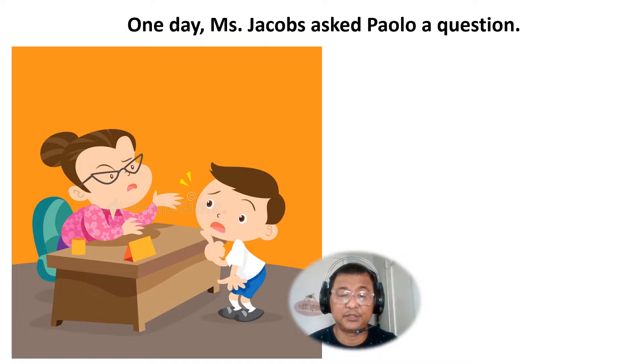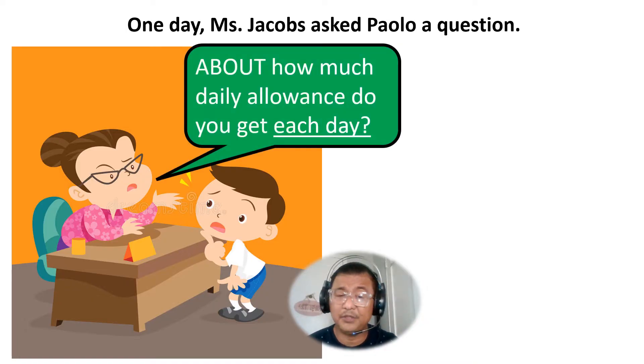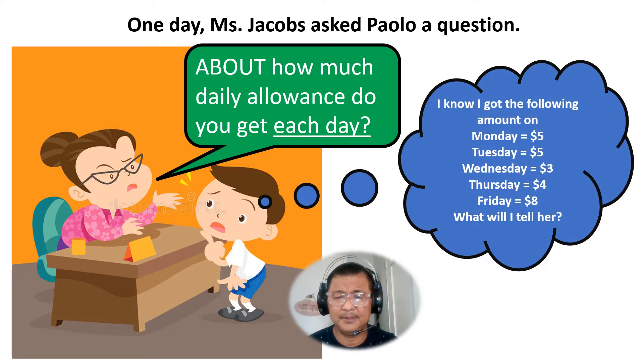One day, Mrs. Jacobs asked Paolo a question. Hey Paolo, about how much daily allowance do you get each day? How much do your parents give you? I know I got the following amount on Monday $5, Tuesday $5, Wednesday $3, Thursday $4, Friday $8. They're all different. But what will I tell her?